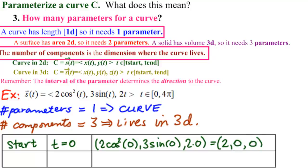And let's do our end point. So that's t equal to 4π. So we have 2 cos²(4π), 3 sin(4π), and 2 times 4π.